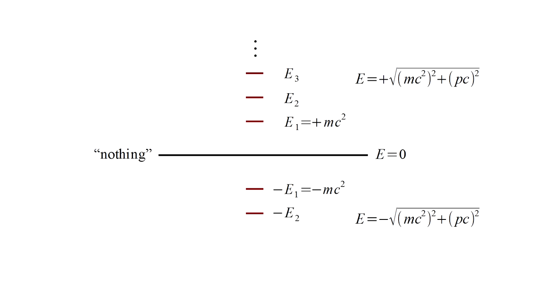Lower energy states correspond to higher momentum, the electron moving faster and faster. And this continues without limit towards E equals minus infinity.